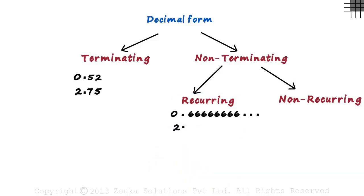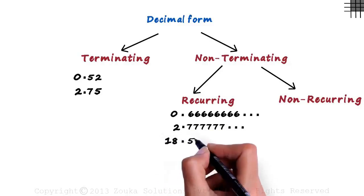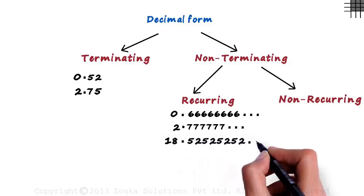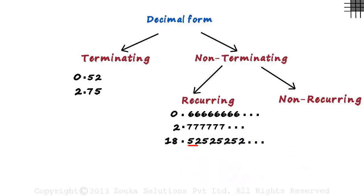Even something like 2.777777 and so on is a recurring non-terminating decimal, since it does not end and the number 7 is repeated indefinitely. But does it mean only one digit can repeat indefinitely? No. Look at 18.52525252 and so on. Here, 52 is repeated indefinitely after the decimal. Since 52 is repeated indefinitely and it does not end, it's called non-terminating recurring decimal.